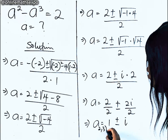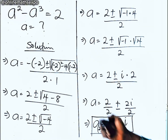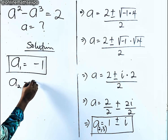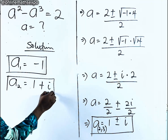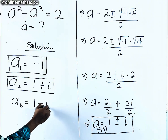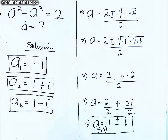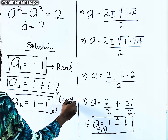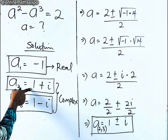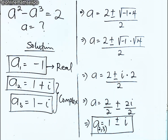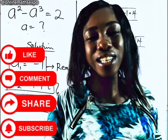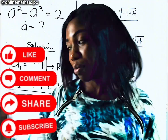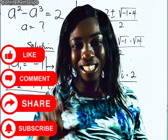So this gives us the second and third values of A. Gathering them all together: the first value of A is negative 1, the second value is 1 plus i, and the third value is 1 minus i. This gives us the three values of A as we said at the beginning. Negative 1 is the real solution, while 1 plus i and 1 minus i are the complex solutions because they contain both real and imaginary parts. I hope you really learned something today. Thank you for always choosing to learn with us. See you in my next class. Bye bye.